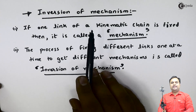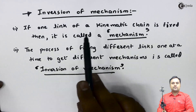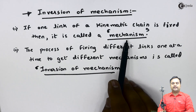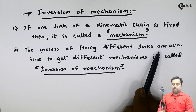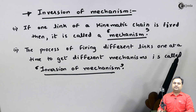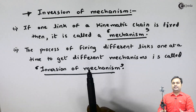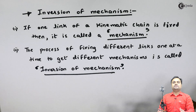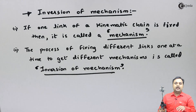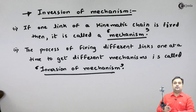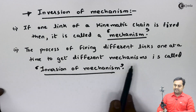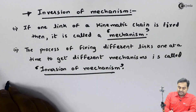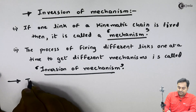As we can see, if we have a kinematic chain and we fix one of its links, it is called a mechanism. The process of fixing the links one at a time — fixing the first link, then the second, then the third and fourth — gives us different mechanisms each time, and that process is called inversion of mechanism.